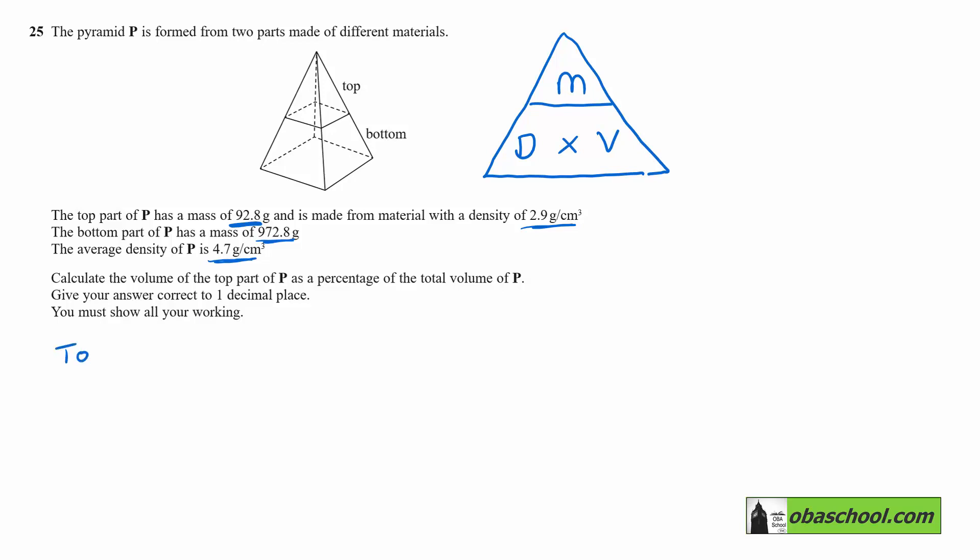So if we consider the top part of the pyramid, the volume is equal to the mass divided by the density. So the volume is going to be 92.8 divided by 2.9, giving us 32 cubic centimeters.